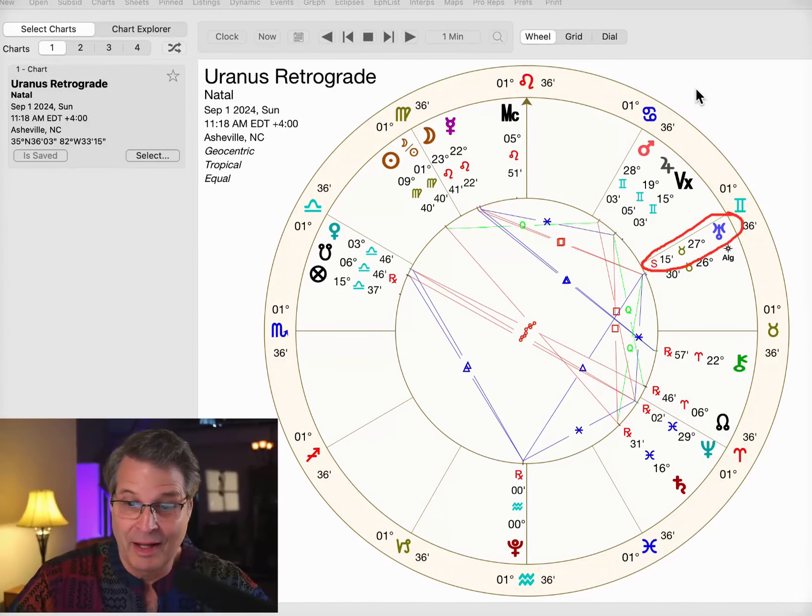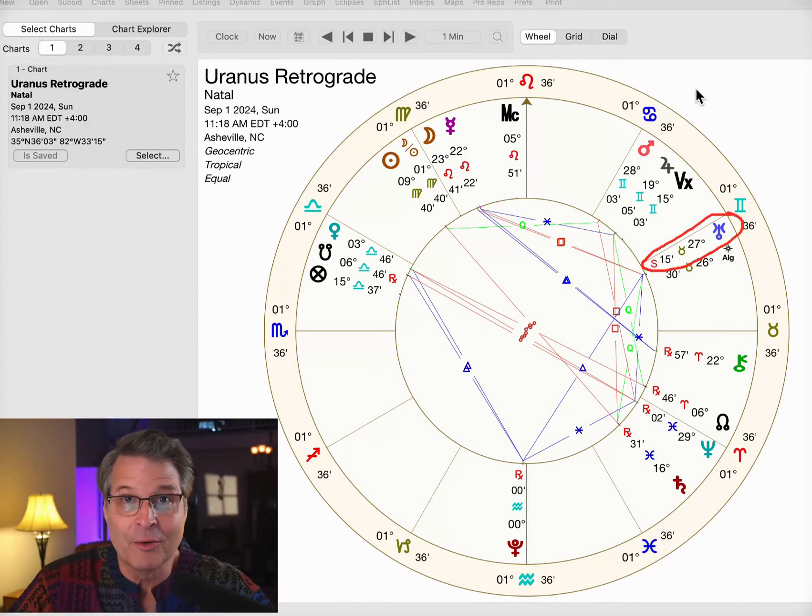Welcome to September. We're going to take a look at the energy the first week of the month here, and a lot of it is going to be largely dominated by Uranus going retrograde. Let's talk about it. And there it is right there, Uranus going retrograde on Sunday the 1st.